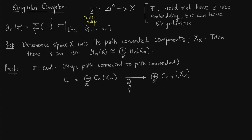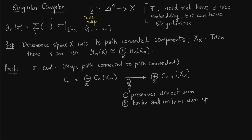This boundary map has two important properties: first, it should preserve the direct sum, and second, the kernel and image of this map split as direct sums. This follows from the property of sigma being continuous. Because there is a split, chain complexes behave precisely in the way they behave in simplicial complexes. The homology groups also split because the kernel and image are splitting — so the homology groups are splitting. That is the essence of computing homology.